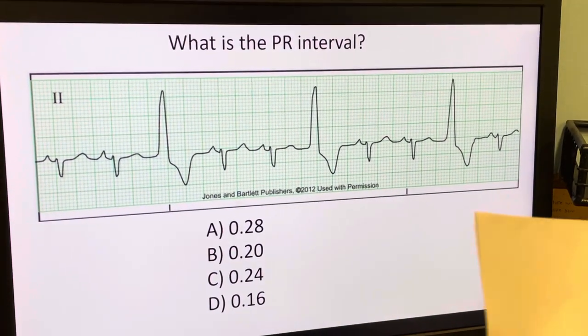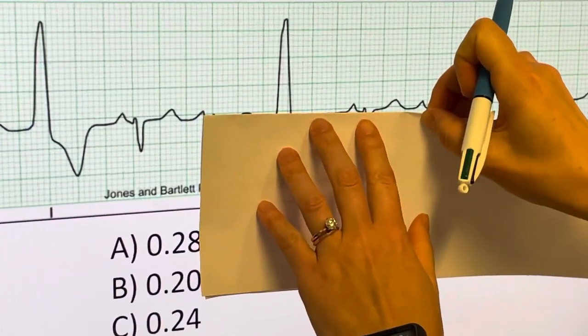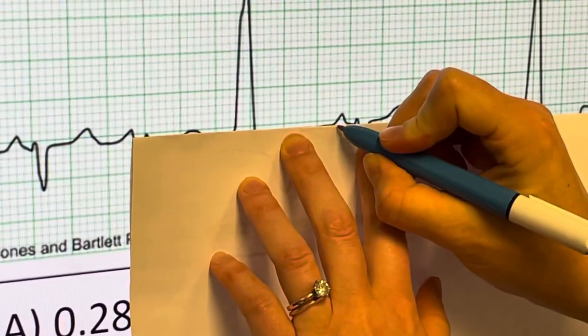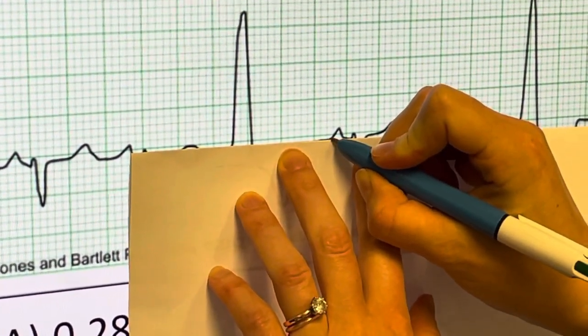So again, I'll just take my paper, find a P wave, and draw a line where it starts to leave the baseline. That's the beginning of my PR interval.